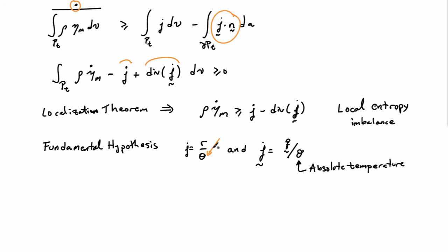I'll plug those back into my expression here for the local entropy imbalance. And that then gives me this statement: ρηm dot is greater or equal to r over θ minus the divergence of q divided by θ.